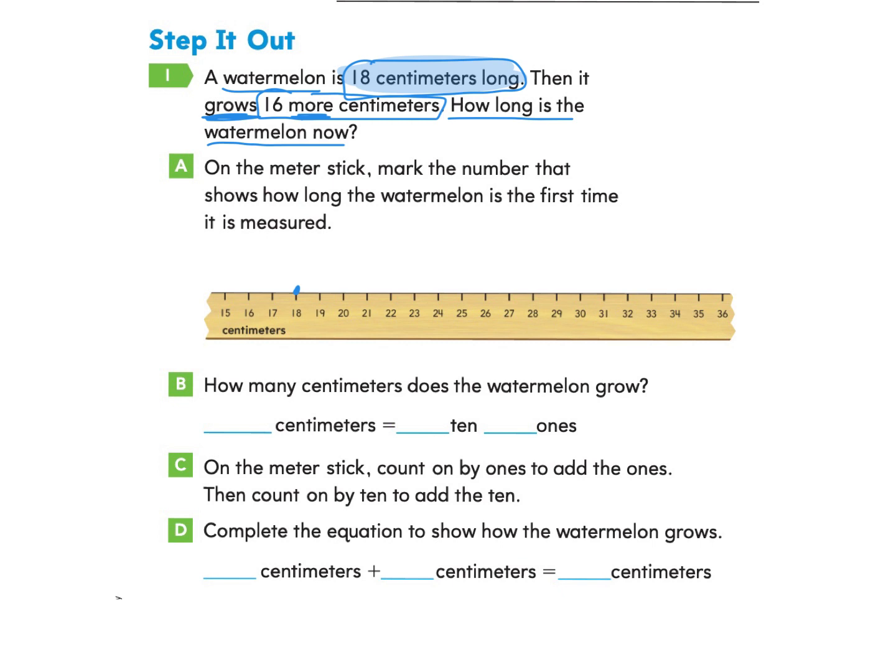Now part B asks us, how many centimeters does the watermelon grow? So we were told that the watermelon grew 16 more centimeters in the word problem. So we are going to write 16 centimeters and they want us to break it into the 16 into tens and ones. Can you do that?